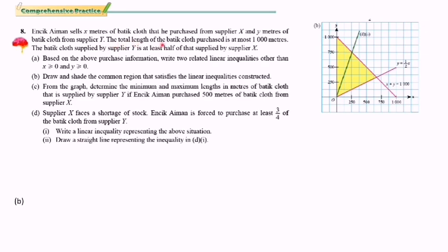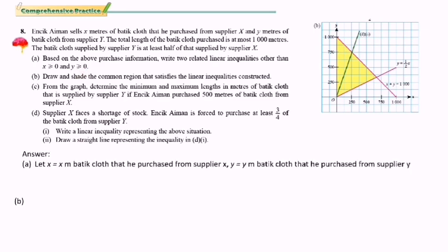The total length of the batik cloth purchased is at most 1,000 meters. The batik cloth supplied by supplier Y is at least half of that supplied by supplier X. Based on this information, write two related linear inequalities other than S ≥ 0 and Y ≥ 0. Let S equal the meters of batik cloth purchased from supplier S, and Y equal the meters purchased from supplier Y.